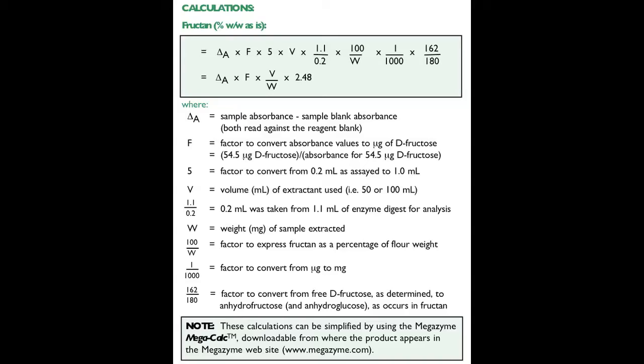W is the weight in milligrams of the sample extracted. 100 over W is a factor to express the fructan as a percentage of flour weight. 1 over 1000 is a factor to convert from micrograms to milligrams. 162 over 180 is a factor to convert from free fructose, as determined, to anhydrofructose and anhydroglucose, as occurs in fructan.